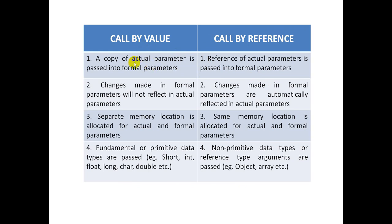Call by value और call by reference basically क्या हैं — these are two different techniques to pass parameter to a method. Java में जब call by value का use कर रहे हैं तो जो हमारा actual parameter है, उसका एक copy pass होता है formal parameter में। लेकिन call by reference में actual parameter का reference pass होता है। इसलिए जो भी changes हम formal parameter में करते हैं, they will not reflect in the actual parameter in call by value, क्योंकि जो भी change हो रहा है वो copy में हो रहा है। इसलिए original variable change नहीं होता in case of call by value.